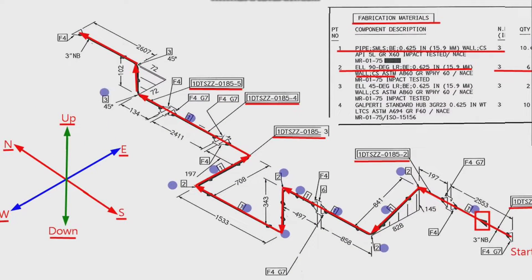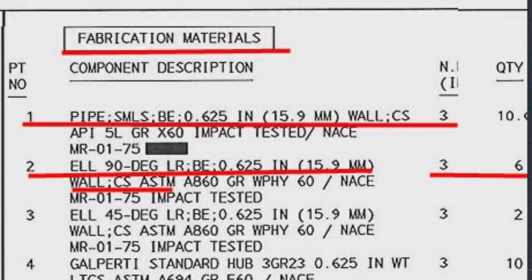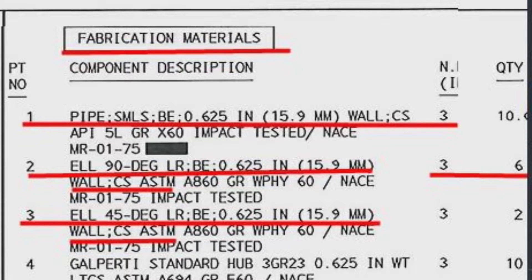Detail number 3 was used in two places in the pipe drawing. Item number 3 is elbow 45 degree, long radius, 0.625 inch — that is 15.9 wall thickness — the size is 3 inch, the material is carbon steel, and the quantity is 2 pieces.